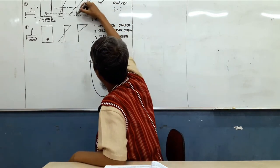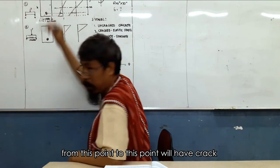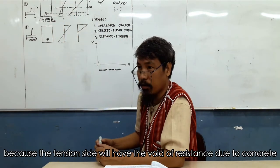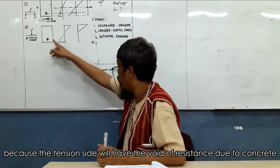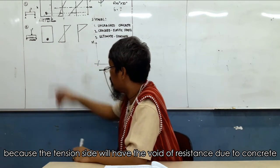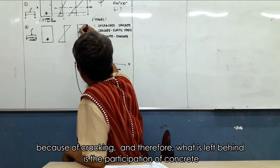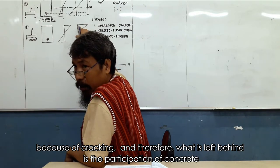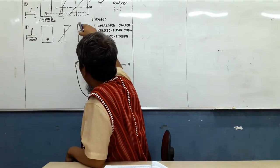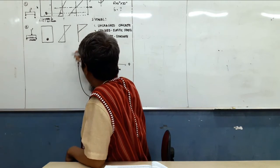It will crack up to the tension side. From this point to this point, it will have crack. Because tension side, it will have the void of resistance due to cracking. And therefore, what is left behind is the participation of compression. This is compressive.